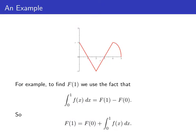For example, if we want to find big F of 1, we know big F of 0, and we can relate big F of 1 and big F of 0 using the fundamental theorem. The definite integral of little f of x dx from 0 to 1 equals big F of 1 minus big F of 0. So we can solve for big F of 1: it equals big F of 0 plus the integral from 0 to 1 of little f of x dx.